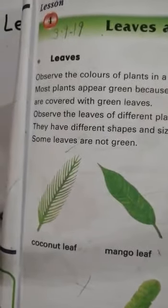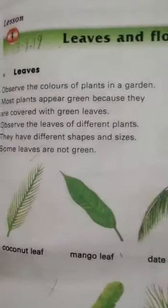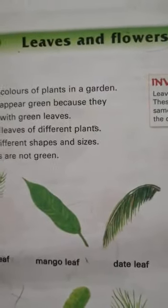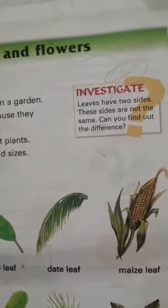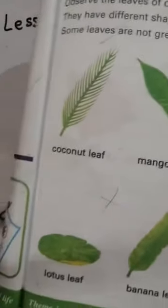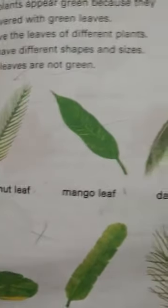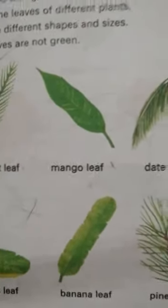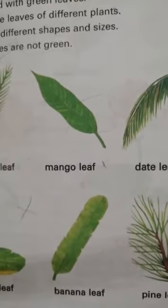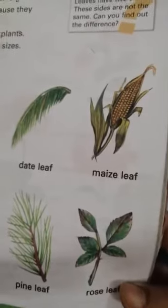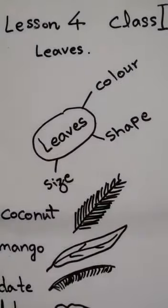Now look at your book, page number 15. You have different types of leaves on that page. آپ کو different shapes کے leaves دکھائے ہوئے ہیں۔ The first one is coconut leaf — دیکھیں اس کی کیا shape ہے۔ پھر mango leaf — آم کے درخت کی leaf کی کیا shape ہے۔ پھر date leaf — خجور کے درخت کی leaf کی کیا shape ہے۔ پھر maize کے leaf کی کیسی shape ہے۔ Next one is lotus leaf — جو کمل کا پھول تھا، اس کی leaf پانی کے اندر ہوتی ہے۔ پھر banana leaf — banana leaf کی کیا shape ہوتی ہے۔ اور پھر pine leaf — pine کے درخت کے leaf کی کیسی shape ہوتی ہے۔ And the last one is rose leaf — گلاب کے پھول کے پتے کی کیسی shape ہوتی ہے۔